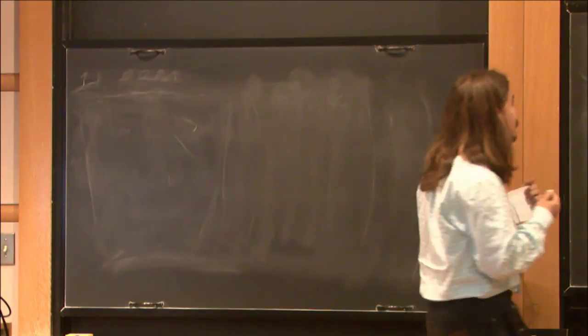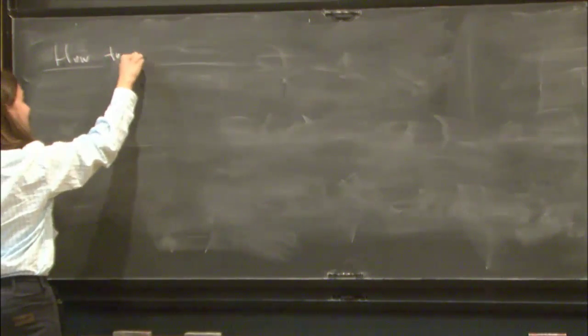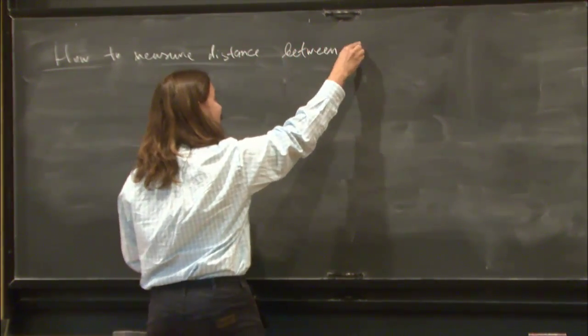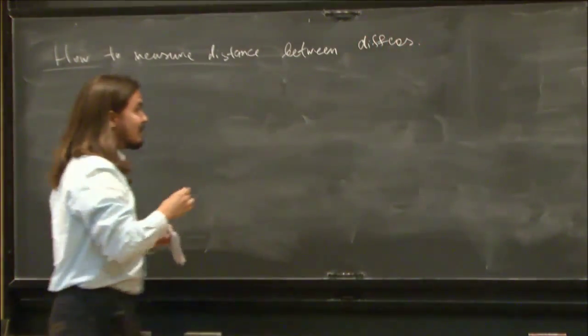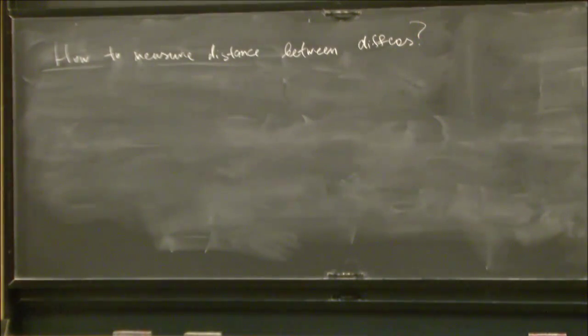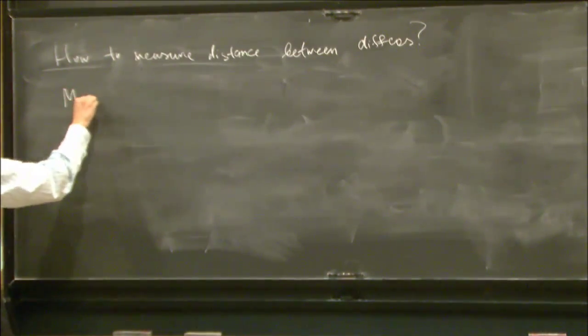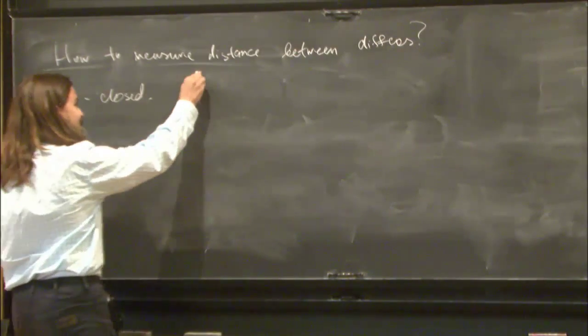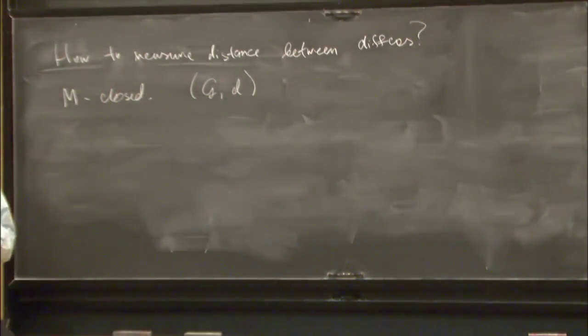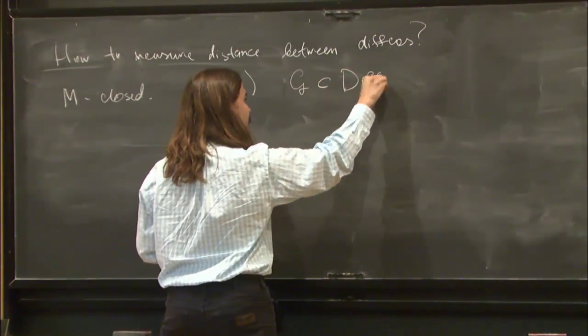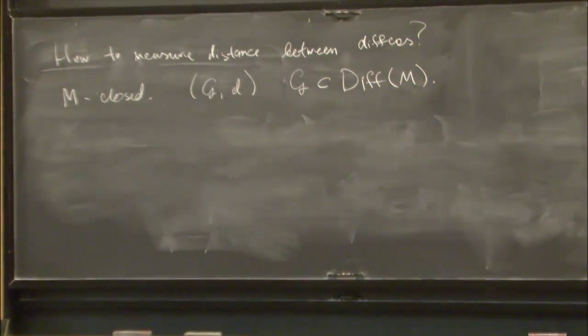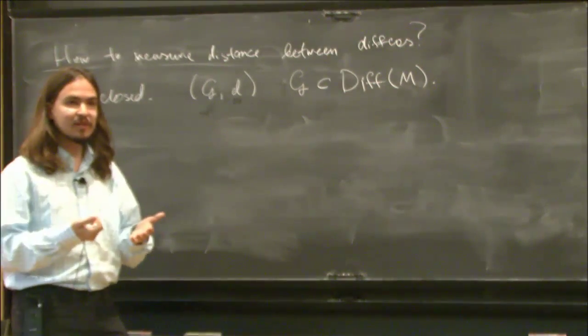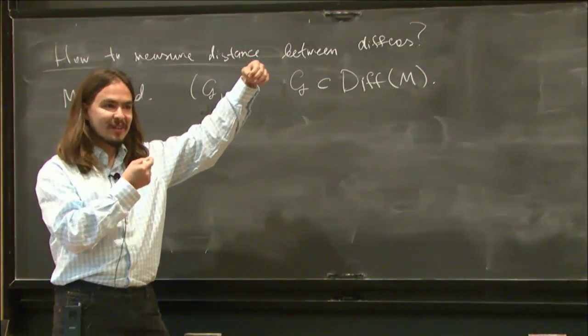What I would like to speak about is a general question of how to measure distance between two diffeomorphisms of a manifold. All my manifolds will be closed unless I say differently, and one would like to consider a metric on some group of diffeomorphisms, so G will be a subgroup. It turns out that a natural kind of metric that one can consider here is a right invariant metric, so one can measure only the distance from the identity.